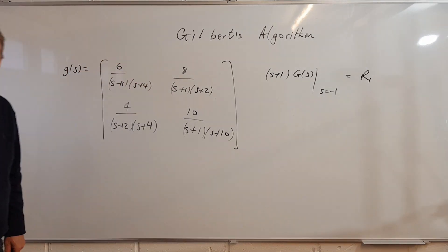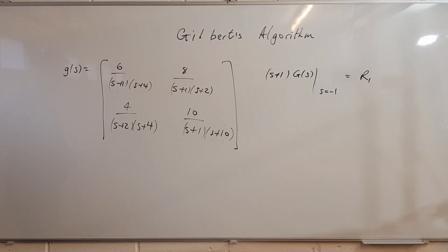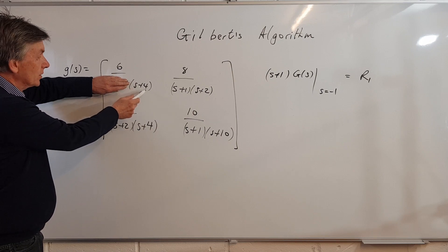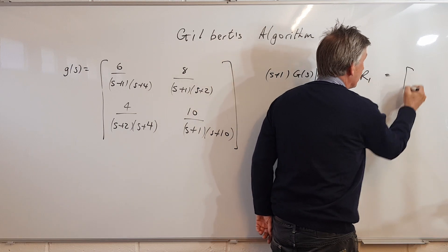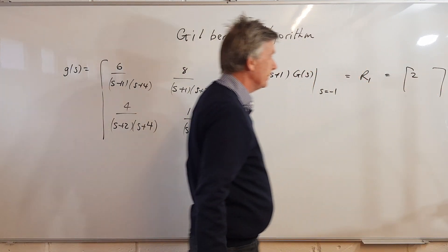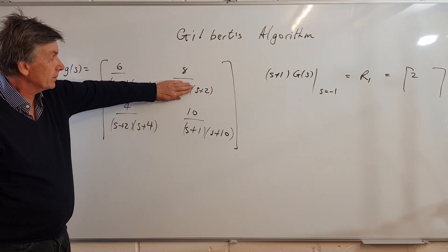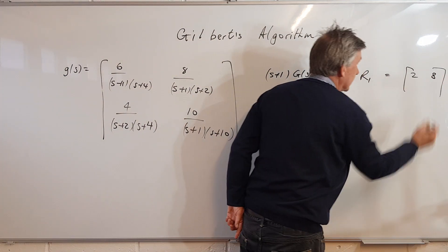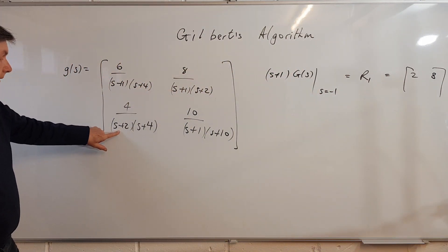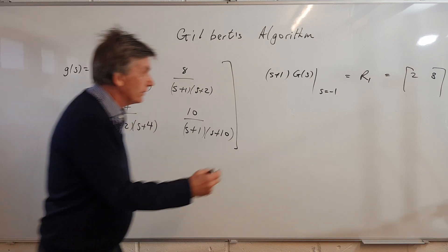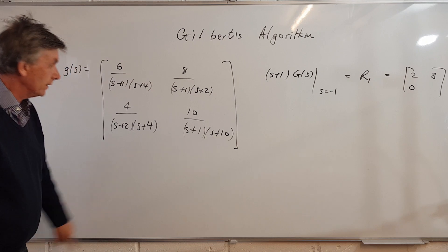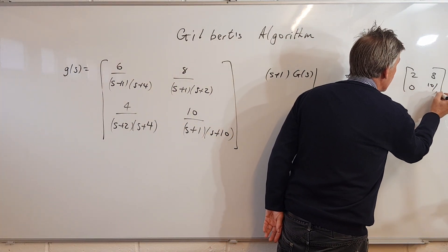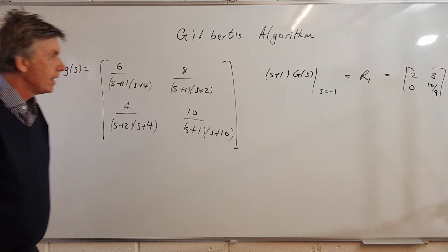So the first thing we do is to work out R1. What we do is cover up the (s+1) factor and put s = -1. So -1 and 4 is 3; 3 into 6 goes 2 — so the first entry is 2. Next we have another (s+1) here, so we cover it up, put s = -1: -1 and 2 is 1; 1 into 8 goes 8 — so we put an 8 in there. There's no (s+1) in the next term, so that becomes 0. And finally we have an (s+1) here, so we cover that up and put s = -1, giving 10/9.